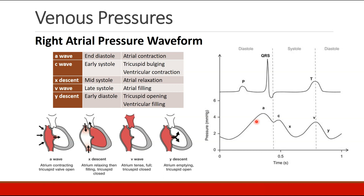This pressure waveform has certain classic features. It starts with an A wave, which occurs at the end of diastole due to contraction of the atrium. Then there's a C wave, occurring in early systole as the tricuspid valve is bulging and ventricular contraction begins. The X descent occurs in mid-systole as the atrium relaxes and starts to fill with the tricuspid valve closed. The V wave occurs in late systole — the atrium fills and becomes tense with the tricuspid valve closed. Finally, the Y descent occurs in early diastole: the tricuspid valve opens, the atrium empties, and the ventricle begins to fill.